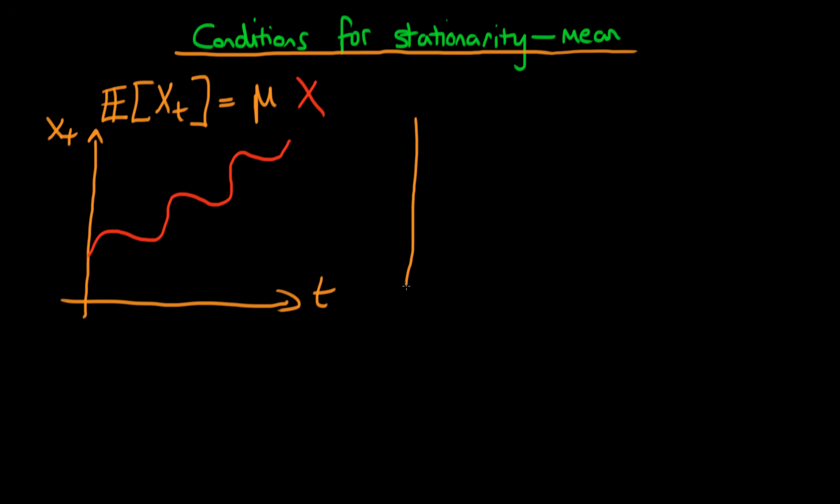However, if I had a process which obeyed dynamics like this, so again my y-axis is xt, my x-axis is time, and my process looks something like this, then even though the process is deviating around a sort of value, it is staying around a constant value. So it's sort of staying around a level which you could sort of think about as being the mean of the process xt. So in this second circumstance, we would actually conclude that xt was a stationary process, or at least it was stationary in mean.